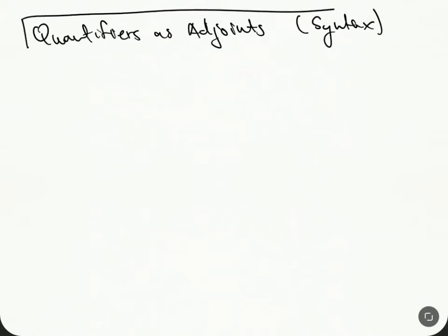So in this video, I want to talk about quantifiers as adjoints. And so this is going to be the syntax part. There's going to be a semantic part as well.